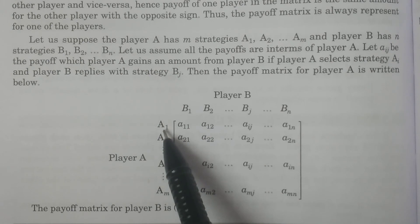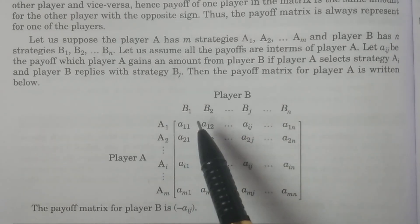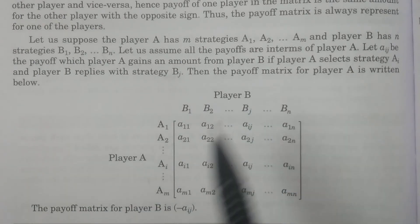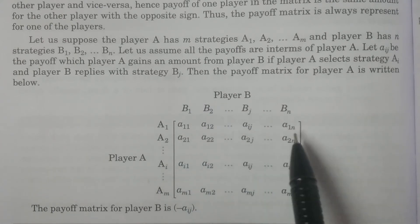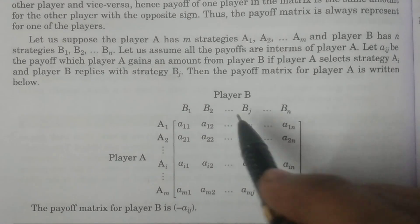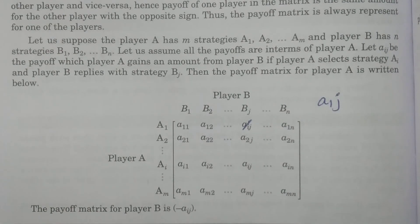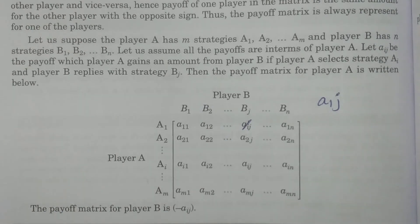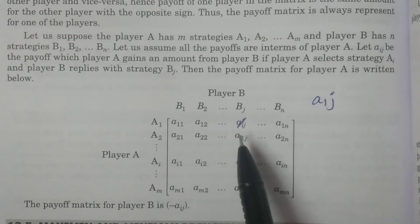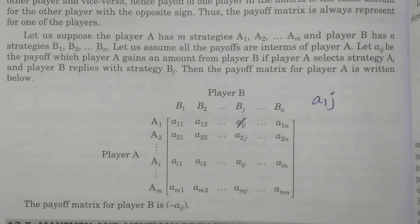The payoff matrix for player A is written with rows representing player A's strategies A1 to Am and columns representing player B's strategies B1, B2, Bj, Bn. The entries are Aij, with elements A1j, Ain, Am1, Am2, Amj, Amn. The gains of player A form this matrix. The payoff matrix for player B is the negative of this matrix, that is minus A. Thank you so much.